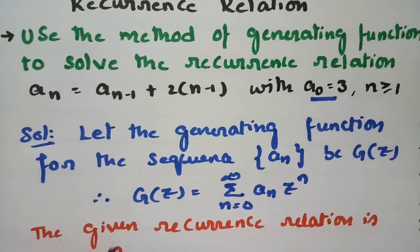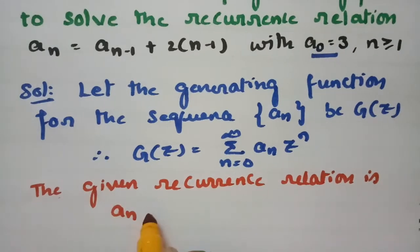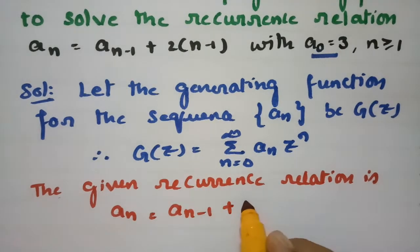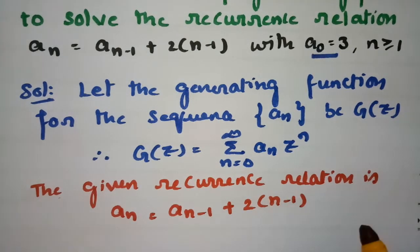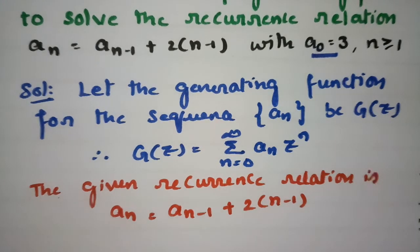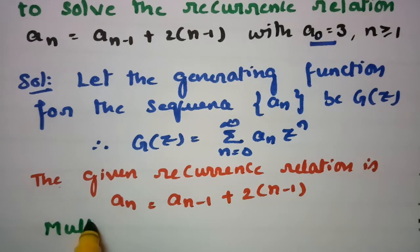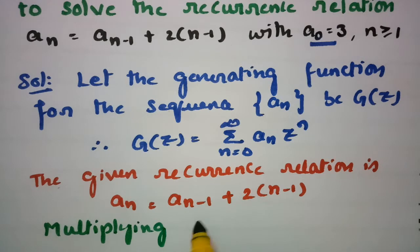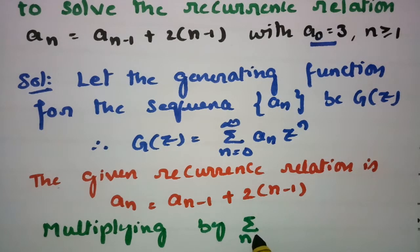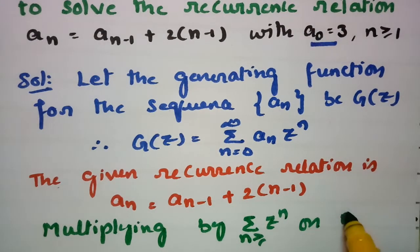The recurrence relation is aₙ = aₙ₋₁ + 2(n−1). Now I am going to multiply throughout the equation — multiplying by Σ (n ≥ 1) zⁿ on both sides.